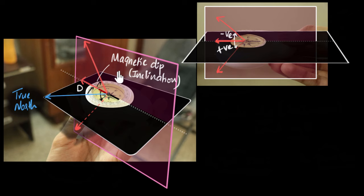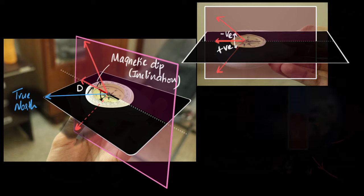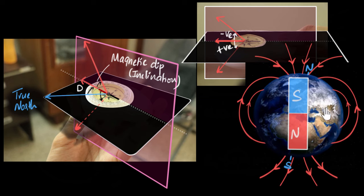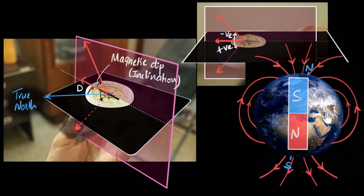One use is that magnetic dip can help you figure out where you are on the planet — whether you are close to the equator, in the Northern Hemisphere, the Southern Hemisphere, or close to the poles. Here's the magnetic field of the Earth, where we can imagine there is a giant bar magnet with magnetic poles reversed compared to the geographic poles. Can you pause and figure out what the values of magnetic dip would be at different parts of the world — at the poles, the equator, the Northern Hemisphere, and the Southern Hemisphere? Think about whether the value will be positive or negative, high or low.